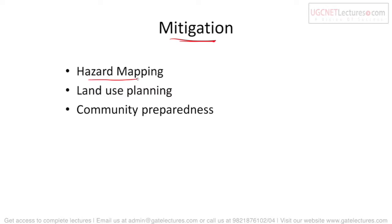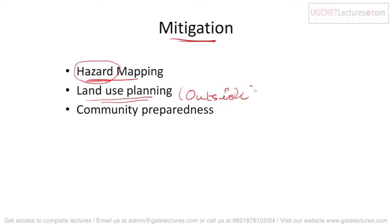Mitigations for chemical disasters include hazard mapping — identifying all possible problems from the industry. Land use planning is important — these kinds of industries should not be inside the main city; they should be located outside so that if something happens, people are not directly affected. Community preparedness is also essential — communities near such industries must know what to do in case of an incident.